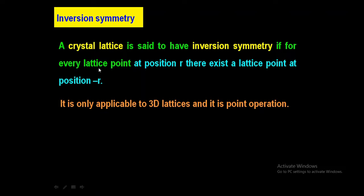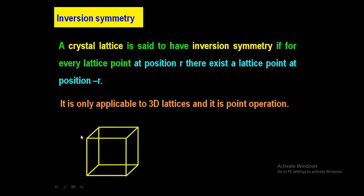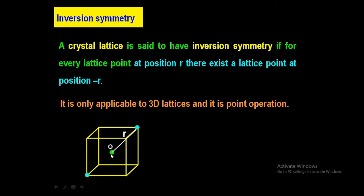This inversion symmetry operation is also known as a point operation. We will see one picture to understand inversion symmetry. Suppose this is a cubic crystal. We will consider one point as the origin. If there is a lattice point at distance r from the origin, there should exist another lattice point present exactly in the opposite direction at distance minus r.